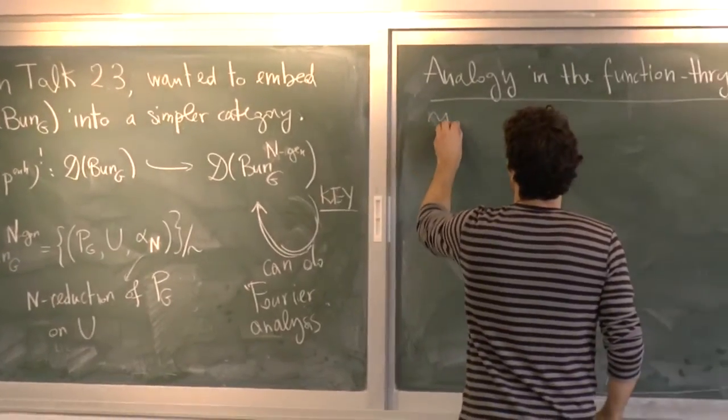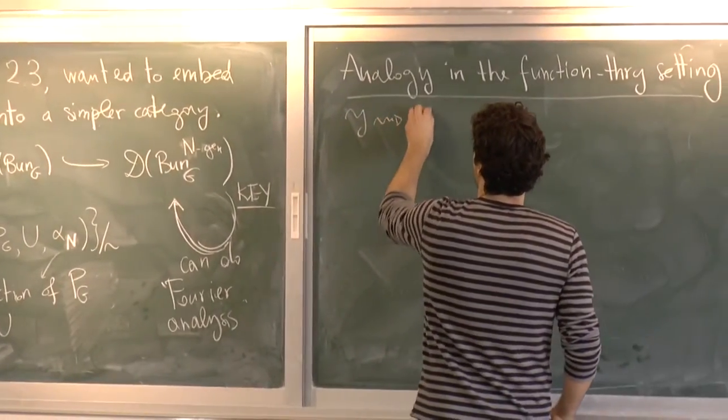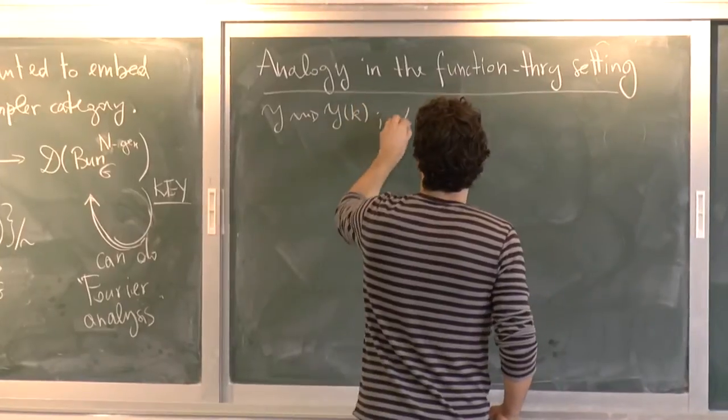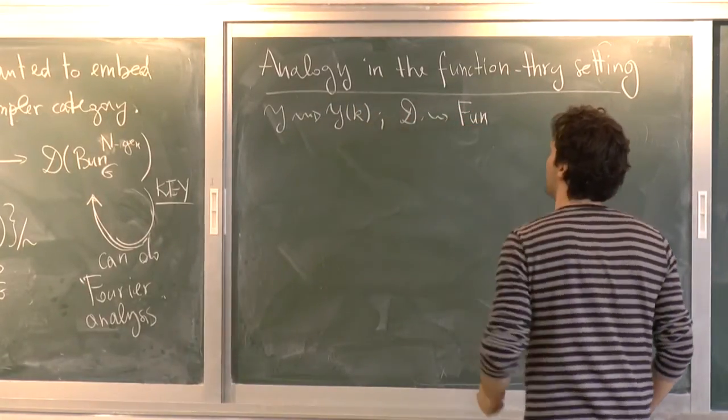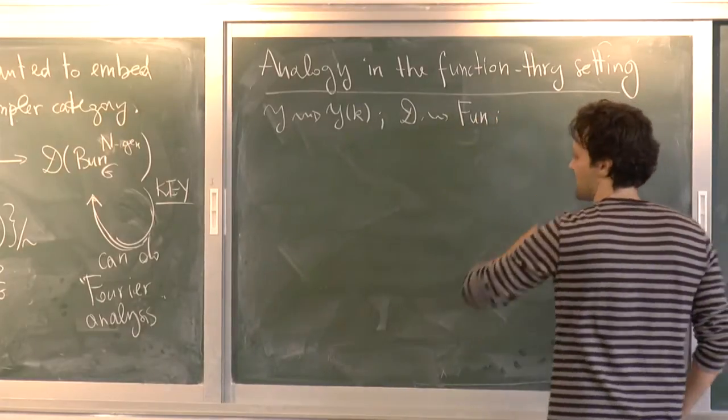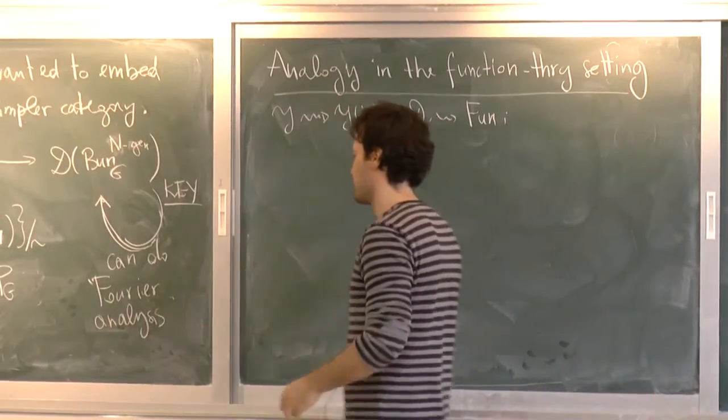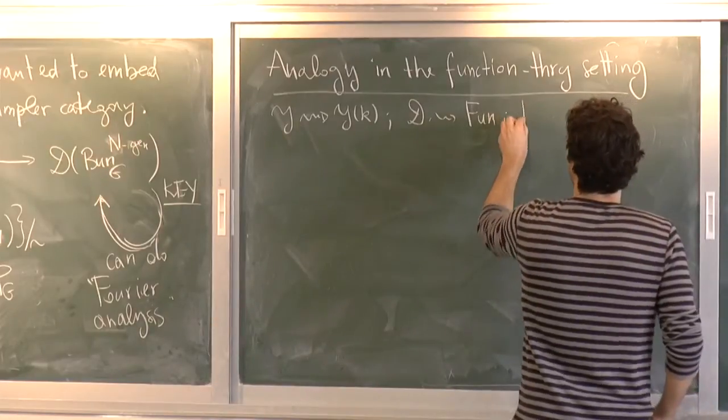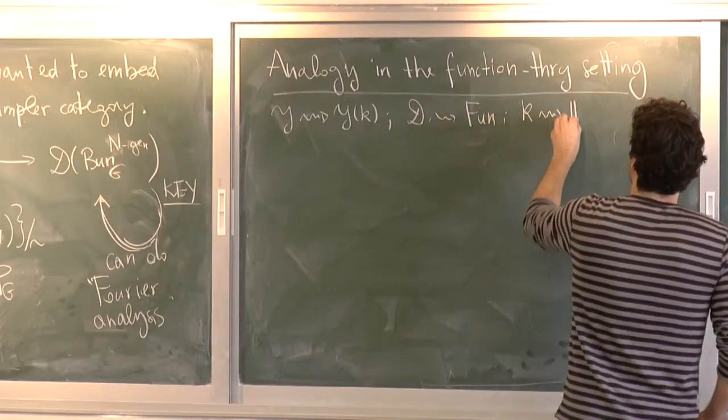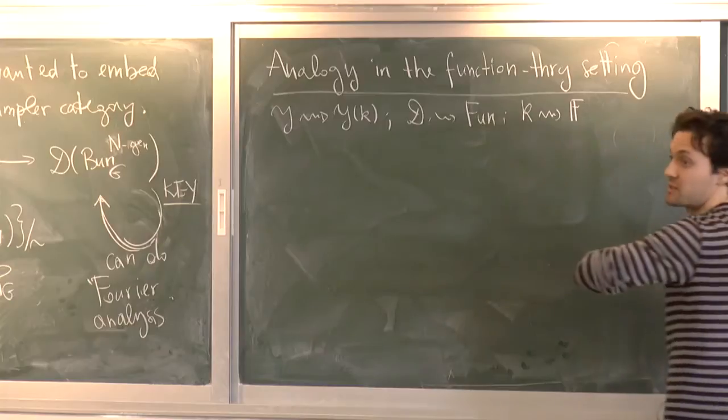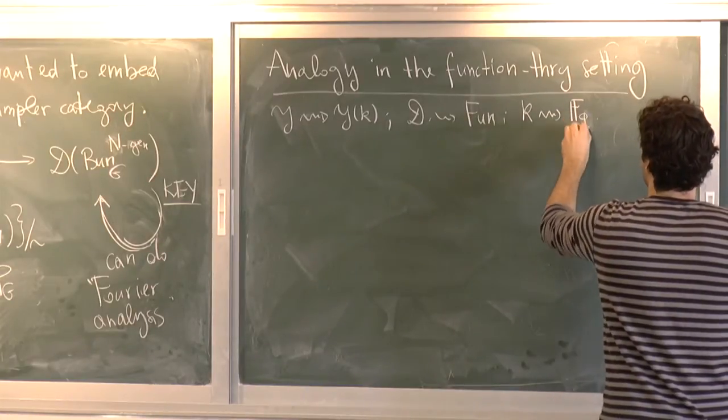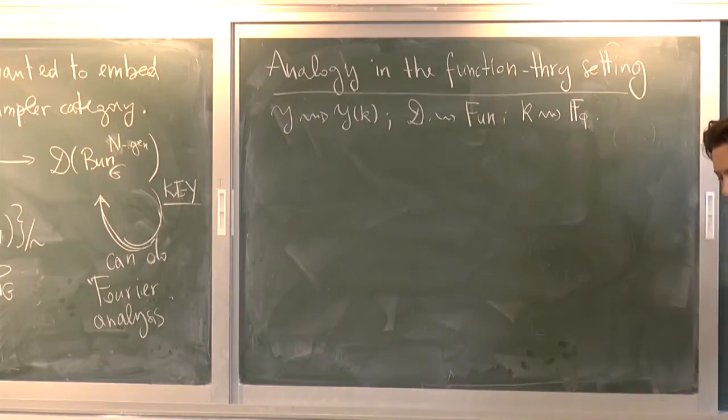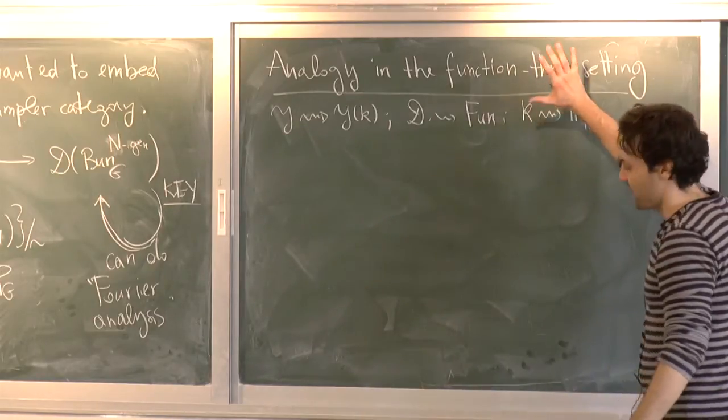It was take a pre-stack and send it to its K valued point. Take D-module and substitute it with complex valued functions. And here, since I want to do Fourier analysis, harmonic analysis, I also need to change the field. Instead of being algebraically closed of characteristic 0, it's going to be a finite field.